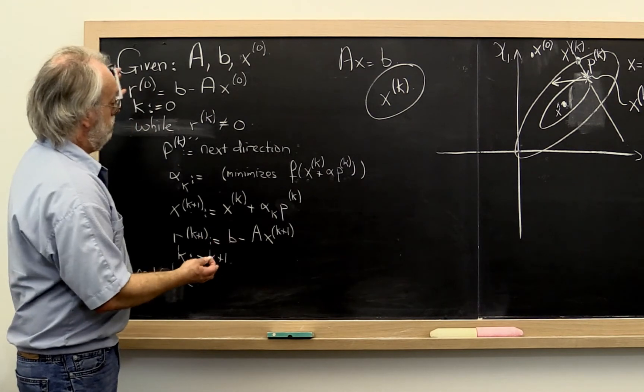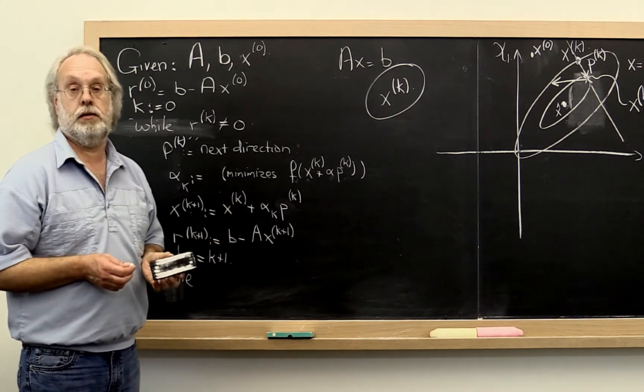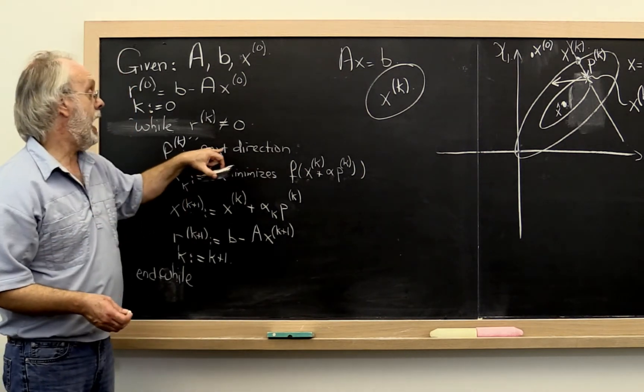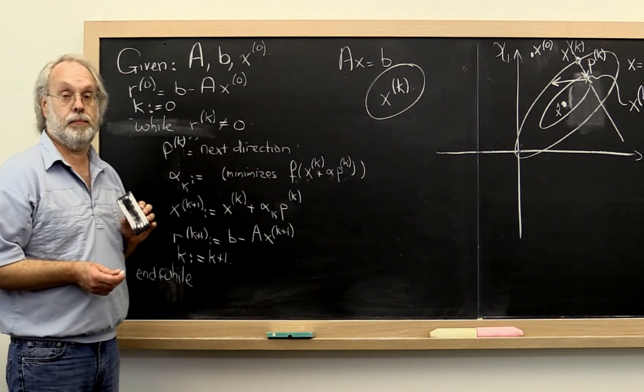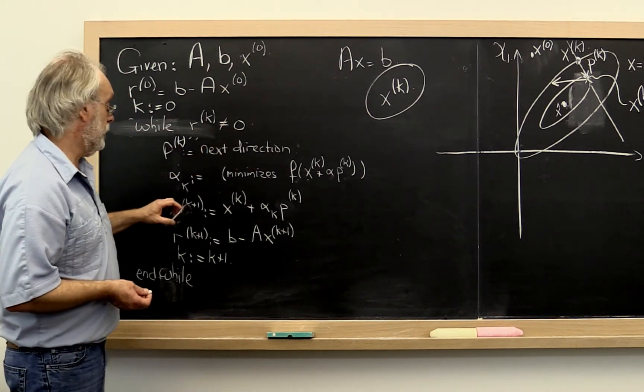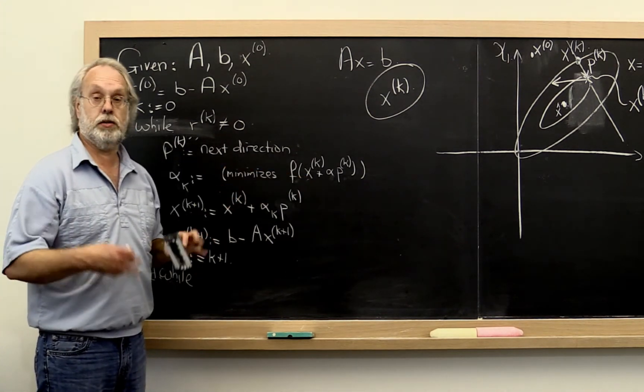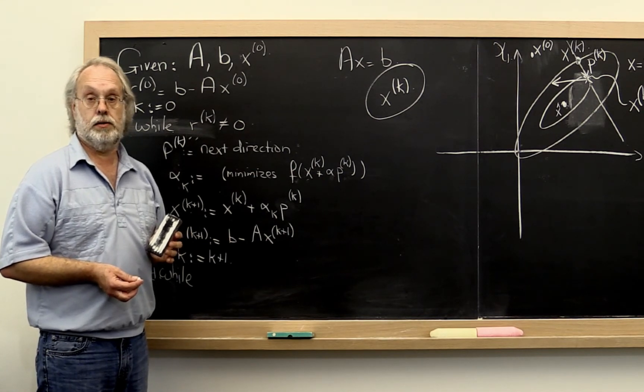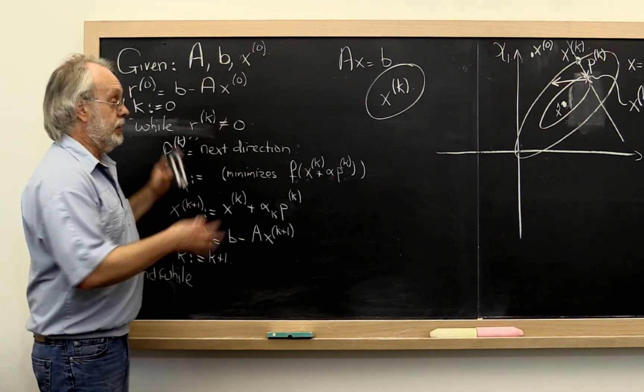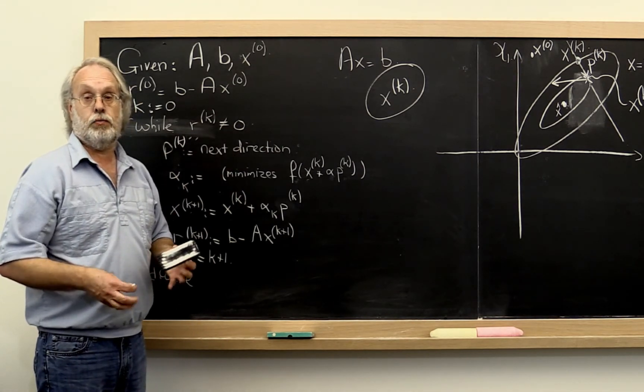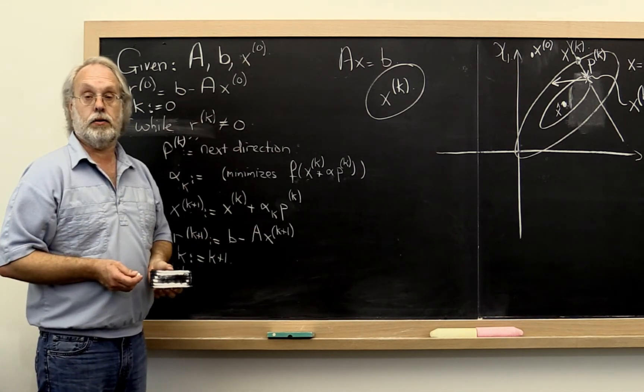And that's our basic descent algorithm. Now there are some details. How do we pick the next direction? Another detail is how do we minimize this? Well, how to minimize this I'm going to leave as an exercise for you to work out. And then the other things we're going to fill in as we go along and refine this algorithm.